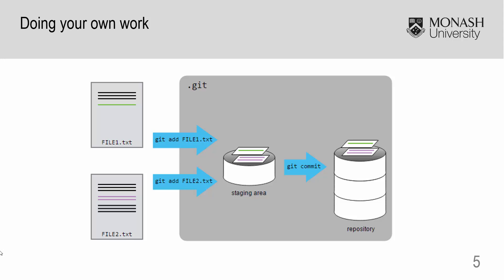Once you are ready to save it as the next version, Git will essentially take the file changes from your staging area and form a snapshot of your files called a commit. Then it will add it to the stack of snapshots known as a repository.